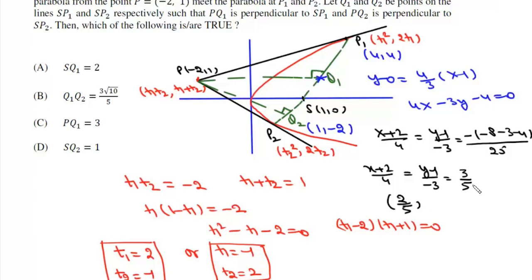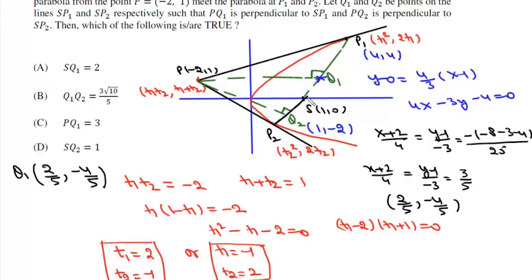The y coordinate is (minus 3)(3/5) plus 1, giving minus 9/5 plus 1 equals minus 4/5. So Q1 is (2/5, minus 4/5). For SP2, both S and P2 have x-coordinate 1, so its equation is simply x equals 1. Since this line is parallel to the y-axis, PQ2 parallel to the x-axis means Q2 has y-coordinate 1. So Q2 is (1, 1).